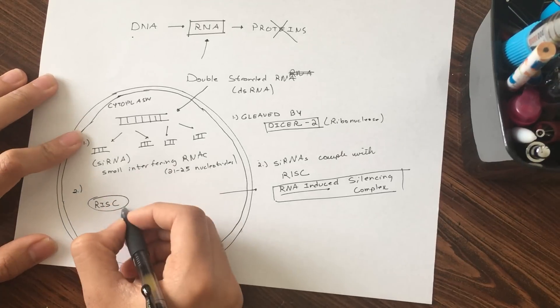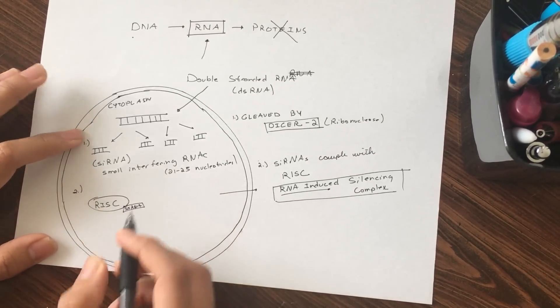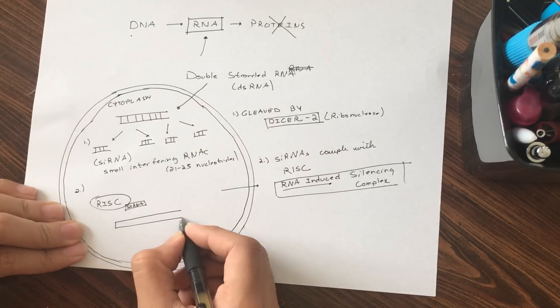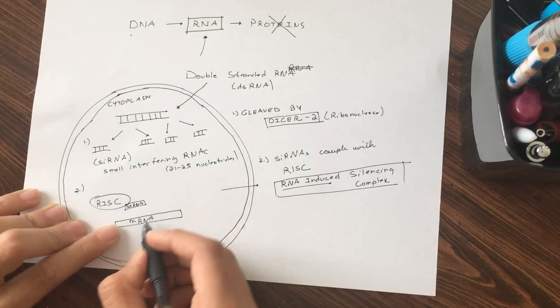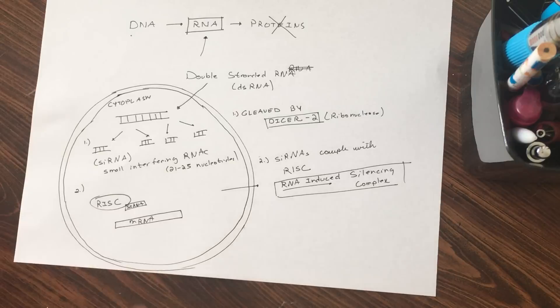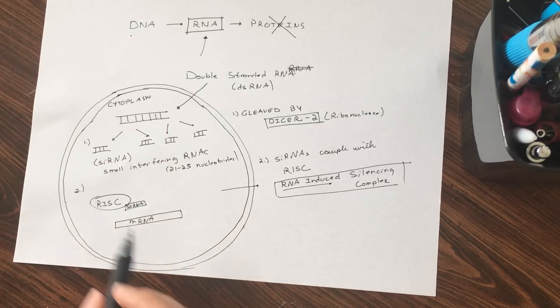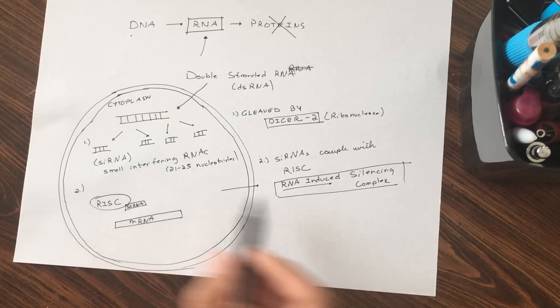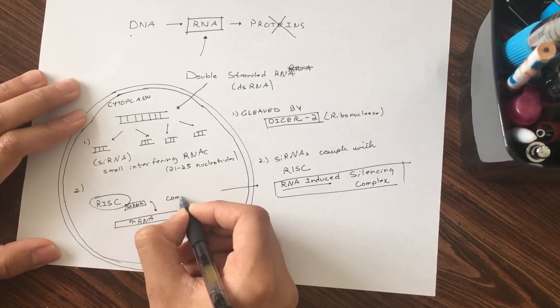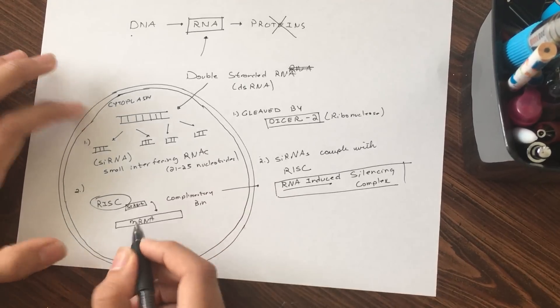Suppose this is the siRNA that you have. What this does is it goes and interacts with the mRNA. Now this mRNA is just the mRNA that's in the central dogma, the RNA that was transcribed. So this mRNA is actually going to produce a protein. But if you have an siRNA interacted with the RISC proteins, this will complementary bind to the mRNA.